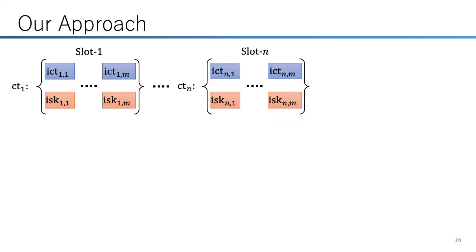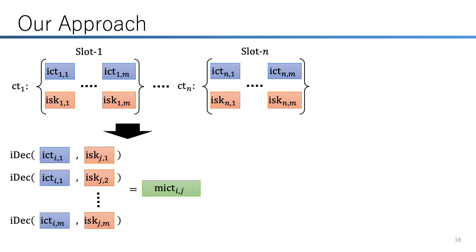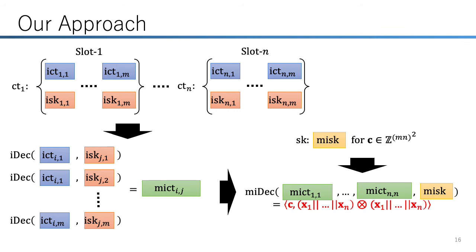In summary, each ciphertext of our candidate quadratic MIFE scheme consists of m pairs of a ciphertext and a secret key of the function-hiding linear FE scheme. In decryption, it first generates the ACFGU ciphertext for slot ij by decrypting all pairs of a function-hiding FE ciphertext in slot i and the secret key in slot j. A secret key of our candidate is the ACFGU secret key of vector c. Finally, running decryption of the m-squared-input ACFGU scheme with all multi-input ciphertexts and the secret key yields the desired decryption value. Correctness for multi-input quadratic functions follows by this construction, but more work is needed for security.